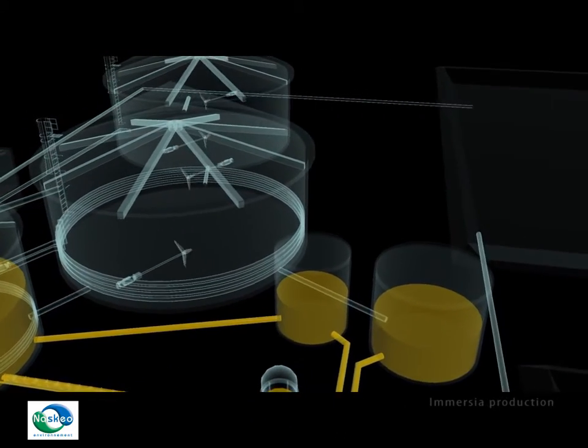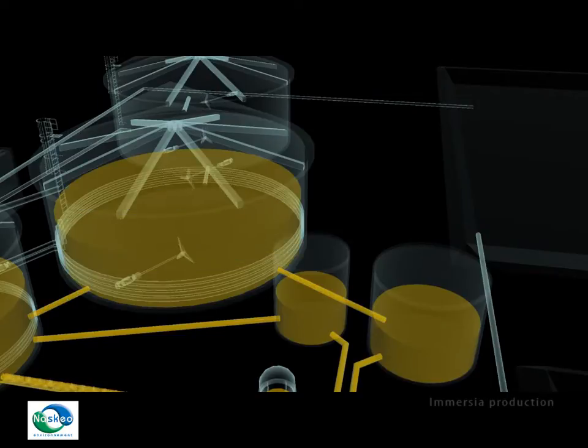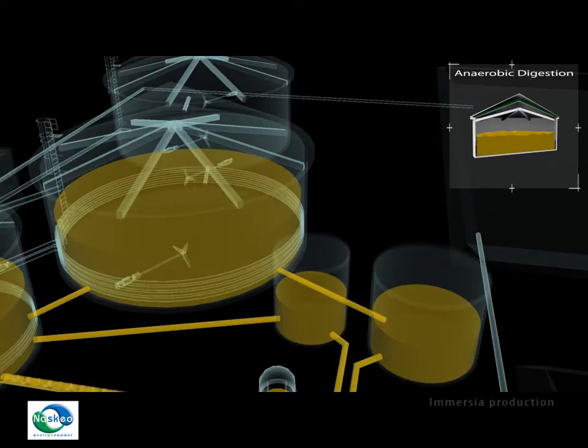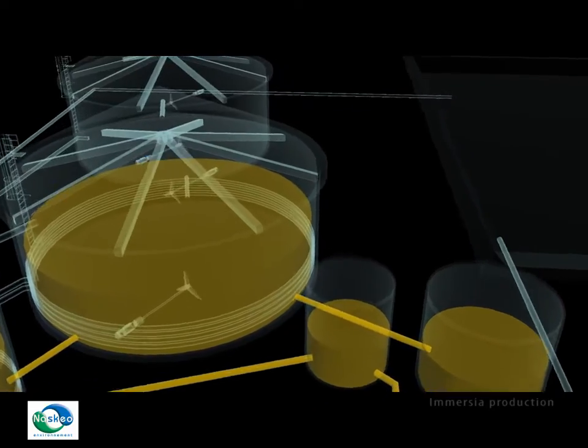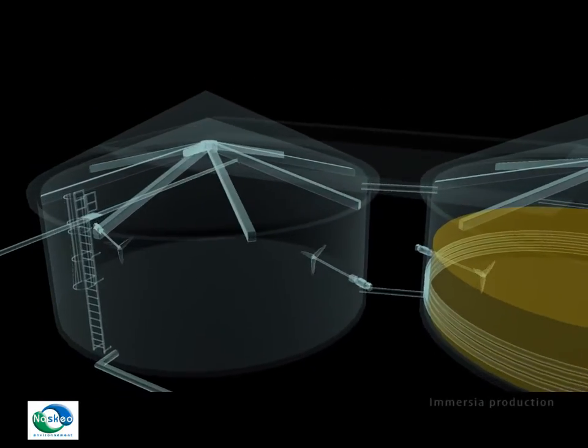Waste is afterwards injected into the main digester. Bacteria digest the soluble matter and produce biogas, the source of renewable energy. Biogas is formed out of methane and CO2. It is stored under the digester's double membrane to maintain a constant supply of biogas energy.